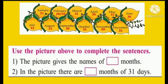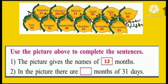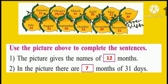Now children, use the picture above to complete the sentences. First: the picture gives the names of how many months? There are 12 months. Next: in the picture, there are dash months of 31 days. January 1, March 2, May 3, July 4, August 5, October 6, and December 7. So we will write here 7.